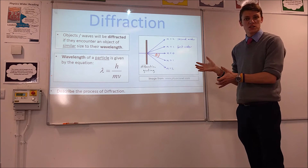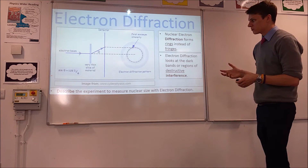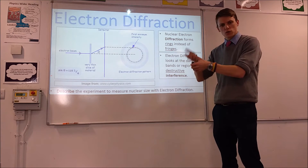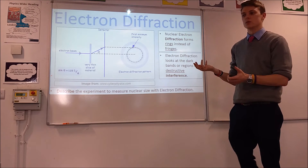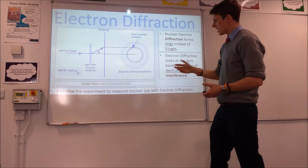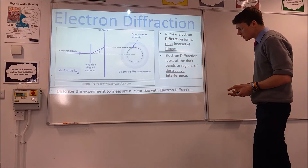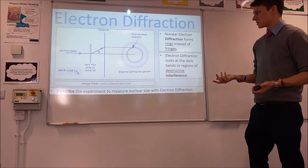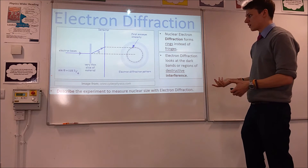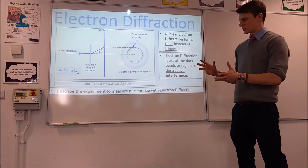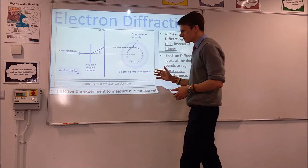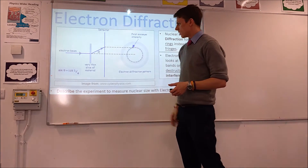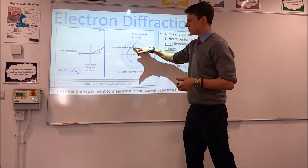Electron diffraction as a measuring device is a little bit different to that. Because the diffraction is not just caused by a slit but by 3D particles, instead of just light and dark fans, we get light and dark rings. Typically with electron diffraction, you look at where the first dark ring is — your first minimum intensity point. Generally speaking, what you do is you fire your electron beam at whatever you're interested in measuring and look at the angle of diffraction to the first minimum intensity.